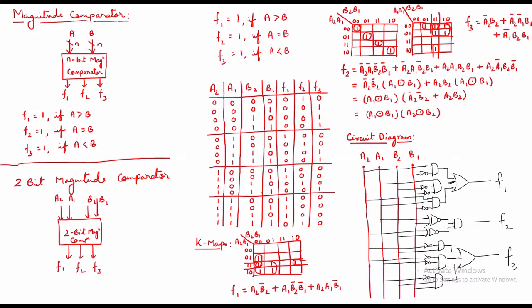So this is the generalized form. I am assuming 2 bits for A and 2 bits for B, and I will try to compare them. The concept I am going to discuss for the 2-bit magnitude comparator will also apply for 3-bit, 4-bit, or whatever. So I have taken 2 bits — A2, A1, B2, B1 — and I am passing them through this comparator circuit, which will give me F1, F2, and F3.